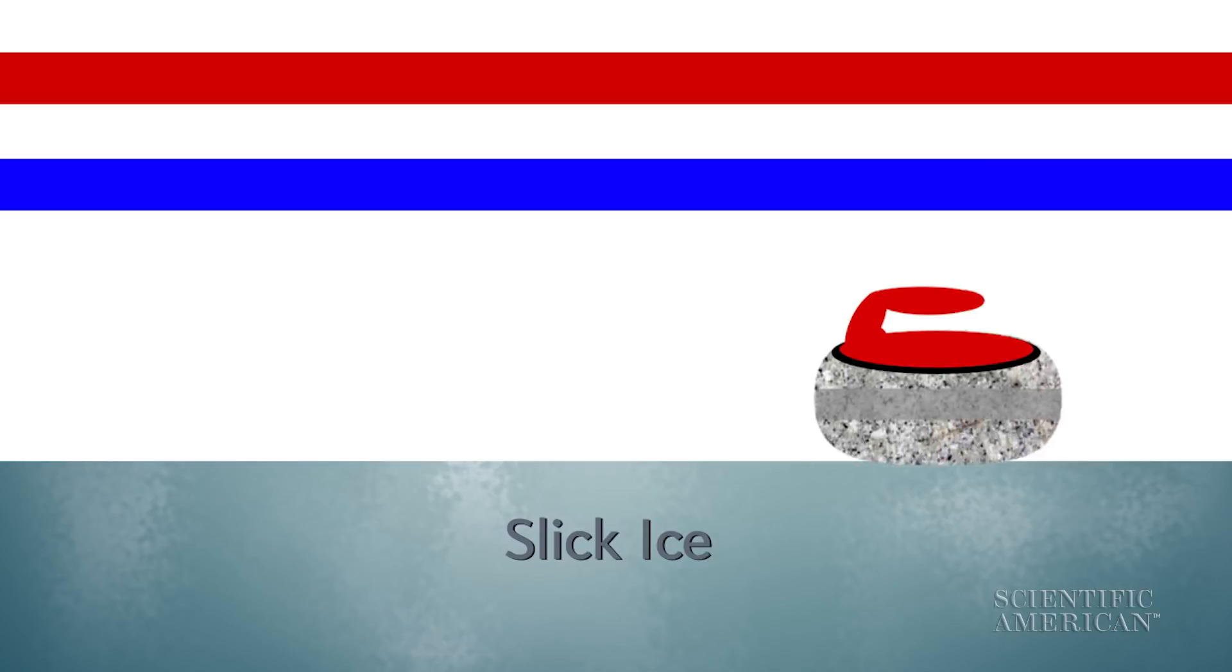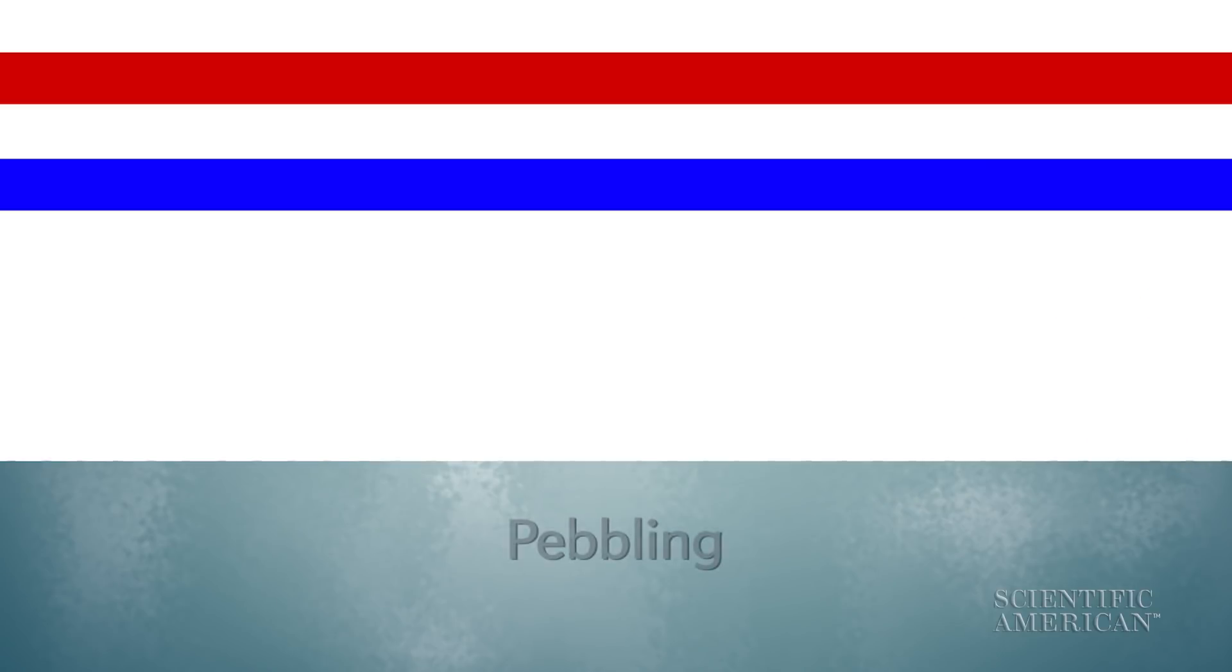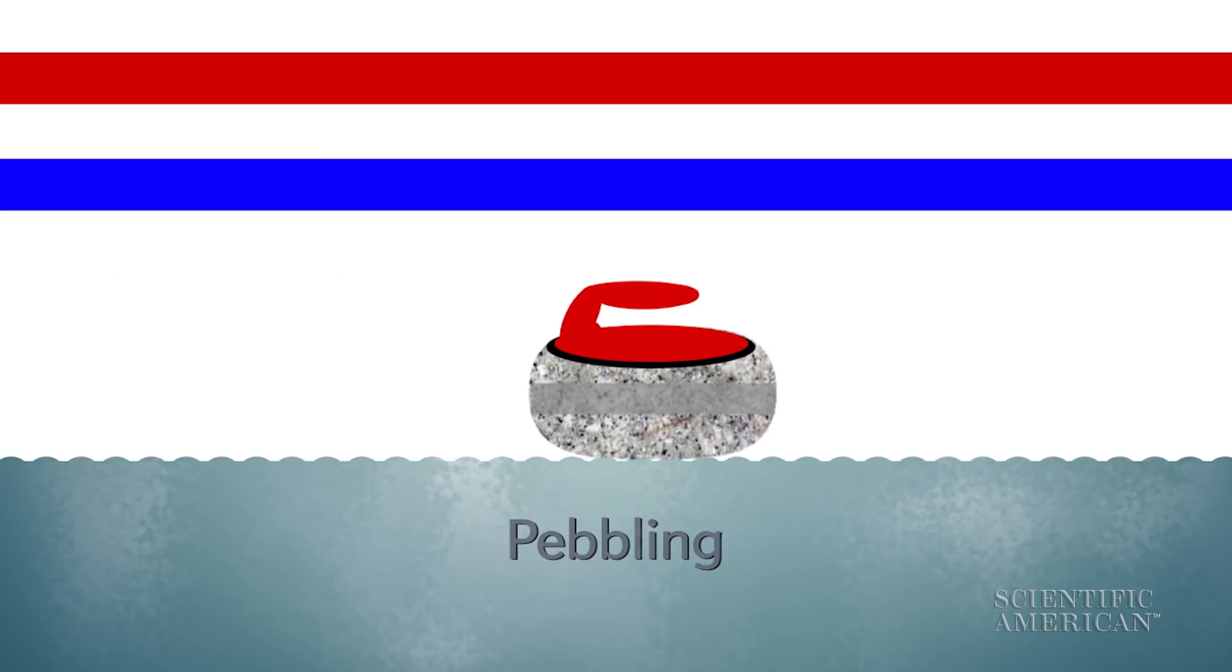The sheet is not meant to be as frictionless as slick ice. It has tiny bumps called pebbling which affect the friction under the moving stone.